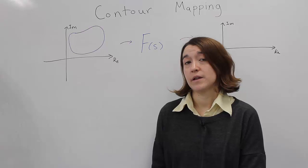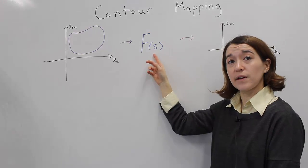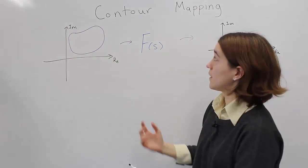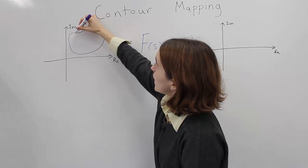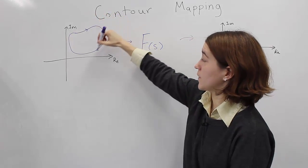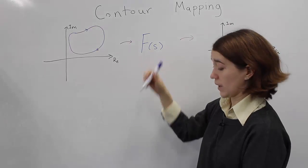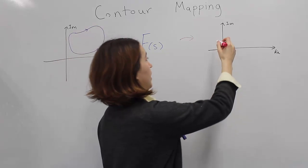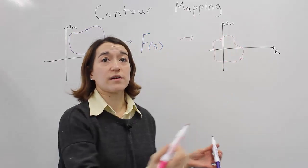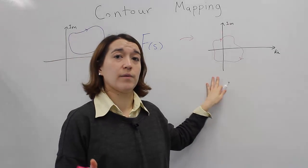Here we're going to talk about contour mapping. The basic idea is that you have a transfer function — we've been working with these. The input is a value on the S-plane, which has a real axis and an imaginary axis. The idea of a contour mapping is that your input could be a contour: a continuous set of points that makes a loop going in a certain direction. You put that contour into your function and get some output contour, which may change shape slightly and will have a direction based on the input direction. Both input and output are on the S-plane.